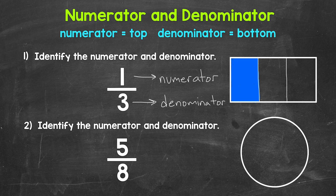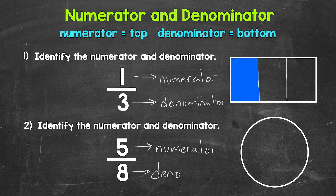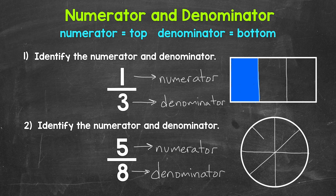Let's move on to number 2 where we have 5 eighths. We'll start by identifying the numerator and denominator. 5 is the top number of the fraction, so that's the numerator. And then 8 is the bottom number of the fraction, so that is the denominator. Now let's draw that fraction out. We will start with the denominator, so the whole needs to be divided into 8 total equal parts. Coming over to the circle here, we need 8 equal parts. We call these 8 equal parts eighths.